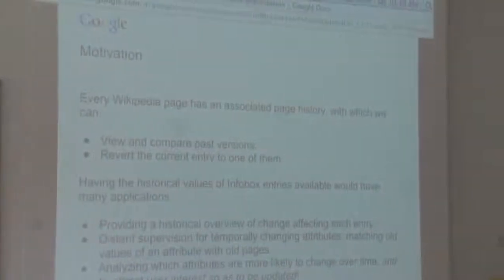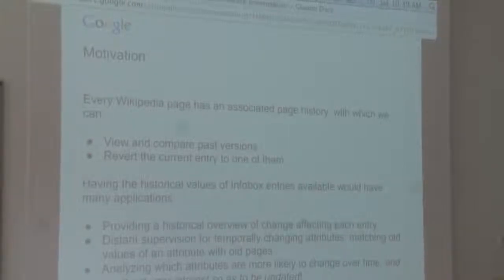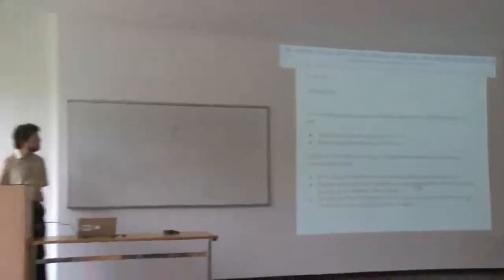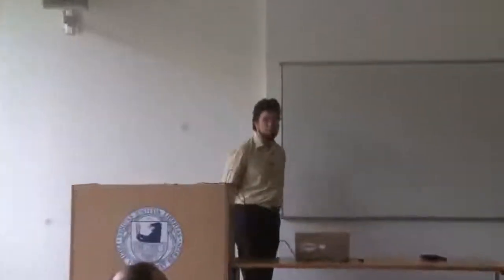Every Wikipedia page also has an associated page history, where you can see all the different changes that have happened to the page. You can view and compare past versions, and revert the current entry to one of them. Having the historical values of all Infobox entries would have many applications, providing a historical overview of how changes affected entries, focusing on the semi-structured nature of the Infobox data.